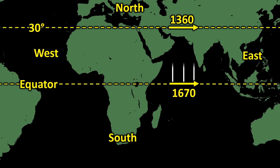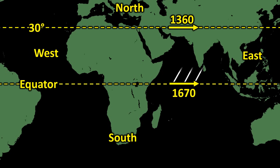As the wind moves northward, it enters regions where the surface is rotating more slowly. For example, at 30 degrees latitude, the surface speed is only about 1,360 km per hour. As a result, the air retains more eastward momentum than the ground beneath it. So instead of moving straight north, it appears to shift to the right, moving in a northeast direction. Any wind blowing from the equator toward the north always curves to the right — that is, toward the northeast. It never travels directly north.